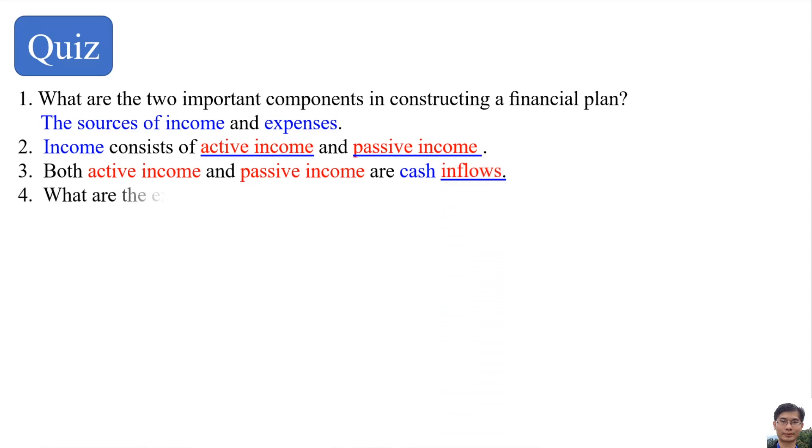Question number four. What are the examples of active income? Some of the examples are salaries, allowance and commissions.